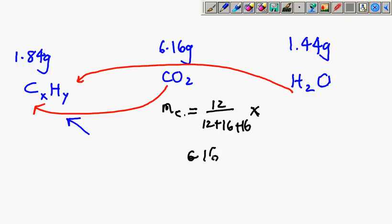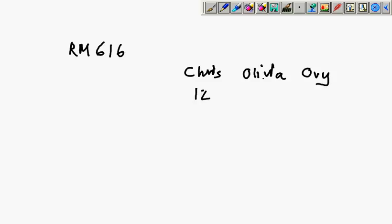Now why am I doing that? Let's consider what we learned in math. If my dad has RM 616 and he decided to give it to Chris, Olivia, and Ovy in the ratio of 12:16:16, I need to know how much money Chris is getting. How much Chris is getting is 12 over (12 + 16 + 16) times 616.